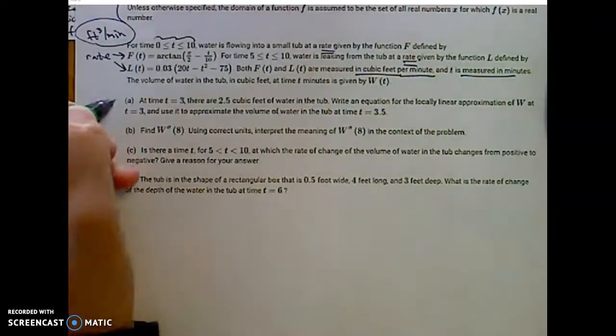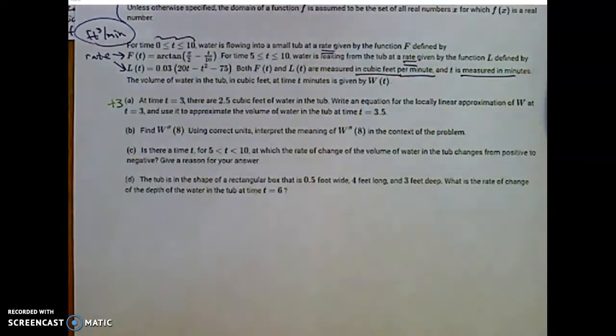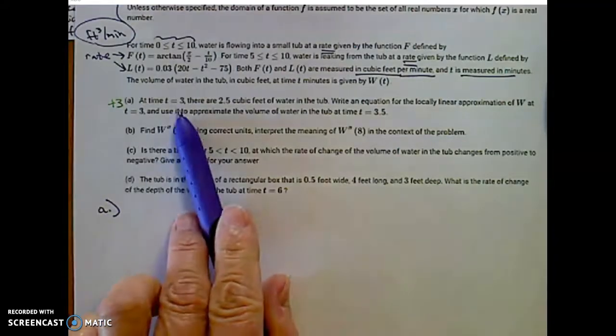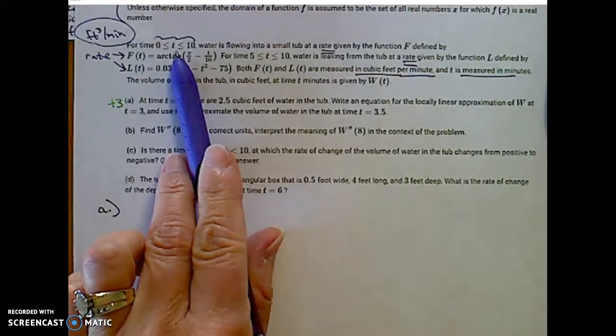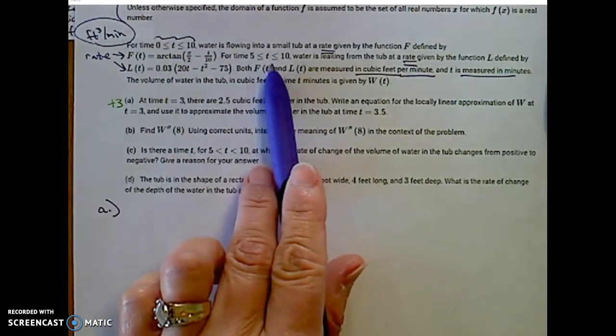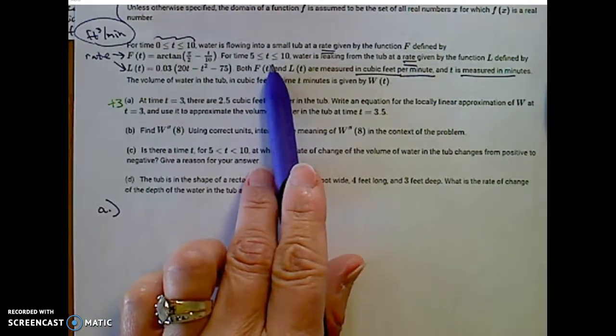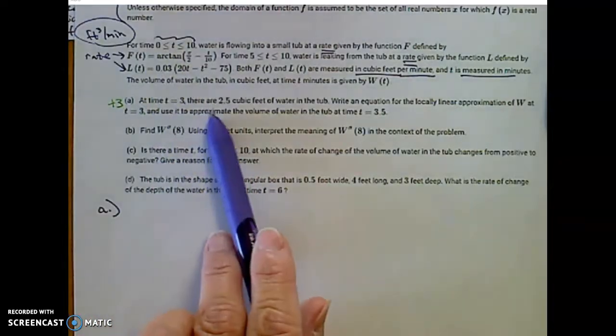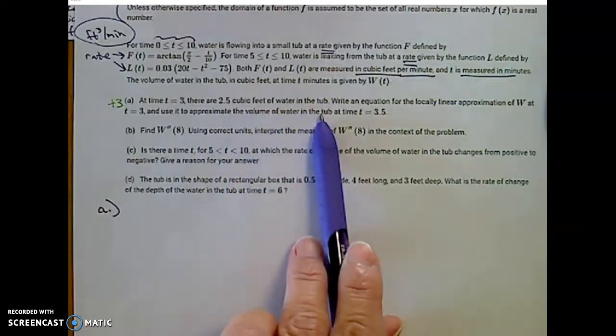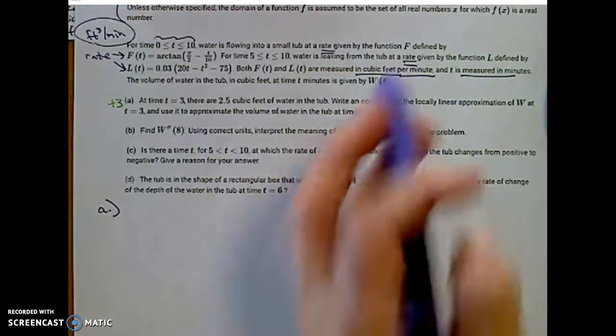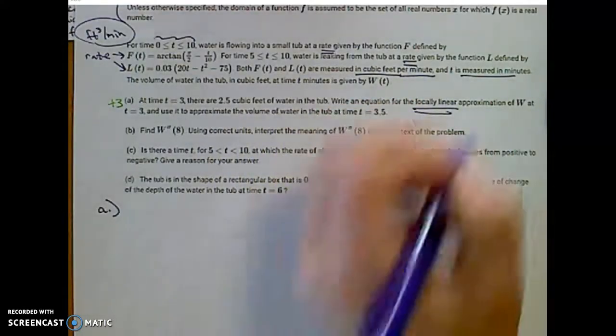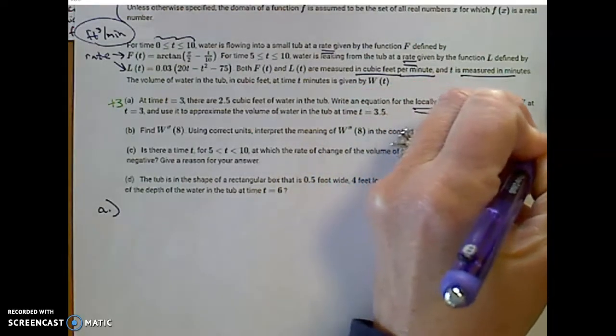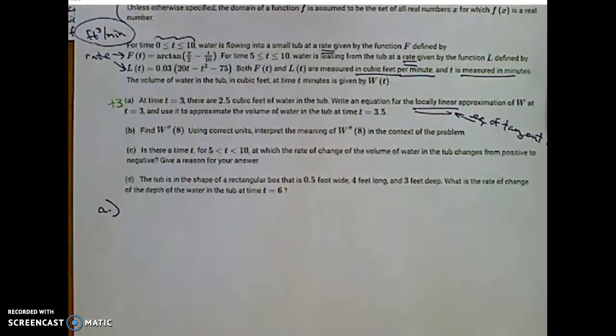Let's read part a carefully. This is a three-point portion of this problem. At time t equals 3, we have to notice that's in this time frame, and the water has not started leaking out yet. At time equals 3 minutes, we're just going to use that function f of t. There are 2.5 cubic feet of water in the tub. Write an equation for local linearity.